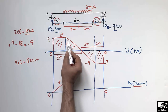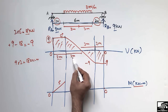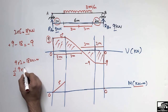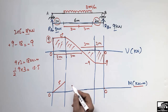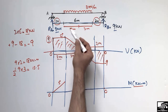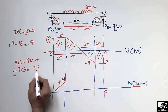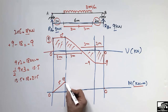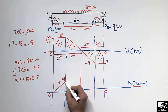Next is a triangle with height 9 and base 3 meters. The area is ½ × 9 × 3 = 13.5 kN·m. This triangle is above the reference line (positive), so we add 13.5 to the previous value of 18, giving a peak bending moment of 31.5 kN·m at midspan. Since the shear force was a first-degree (linear) line over this region, the bending moment curve here is a second-degree (parabolic) line.